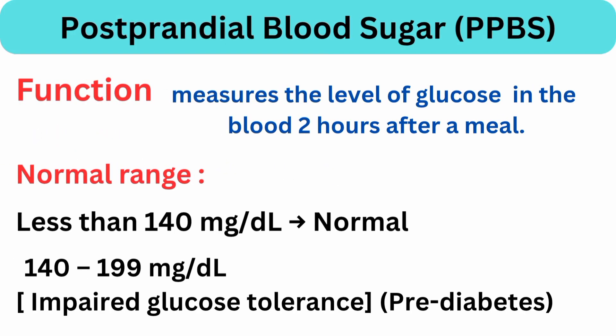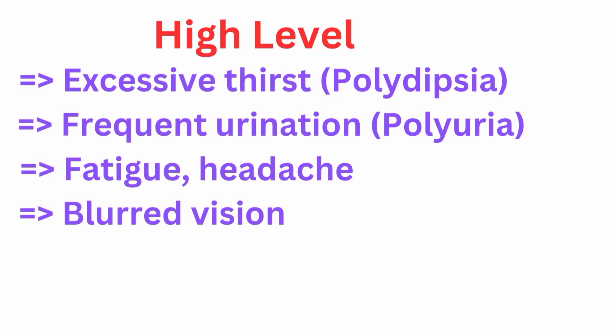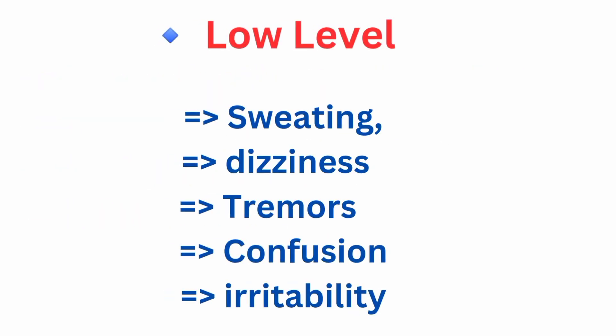Post-prandial blood sugar (PPBS): its function is to measure the level of glucose in the blood two hours after a meal. Normal range: less than 140 mg/dL is normal; 140 to 199 mg/dL is impaired glucose tolerance or pre-diabetes. High level symptoms include excessive thirst (polydipsia), frequent urination (polyuria), fatigue, headache, and blurred vision.